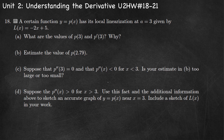In this video I'll be working through unit 2 homework problems 18 through 21. Number 18: a certain function y equals p of x has its local linearization at a equals 3 given by L of x equals negative 2x plus 5. The local linearization is just another way of describing the tangent line — the line tangent to this graph at x equals 3 is y equals negative 2x plus 5.